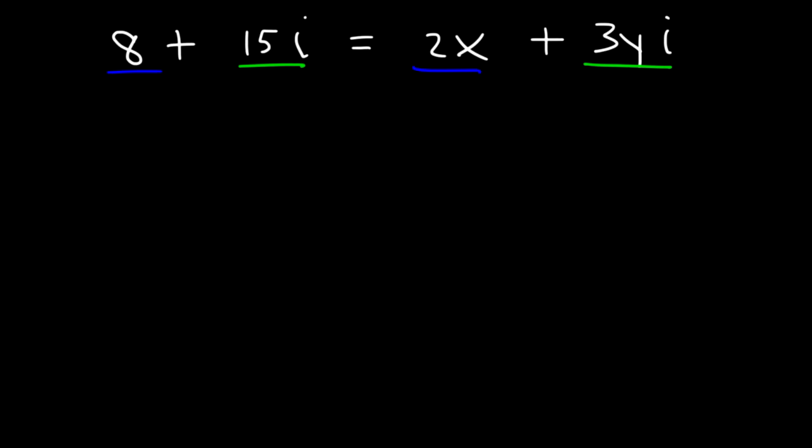So 8 and 2x are the real portion of the equation. Therefore, we can set them equal to each other. The imaginary portion will set those two equal to each other. And now we can solve for x. So 8 divided by 2 is 4.